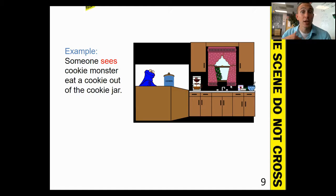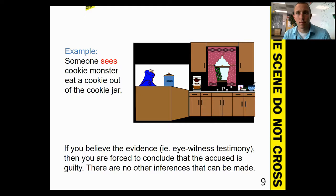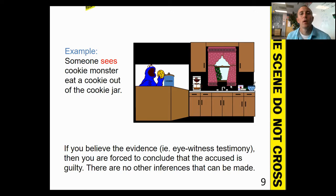Hearsay is usually inadmissible in court. For example, if someone actually sees Cookie Monster eat a cookie from the jar, and you believe that person's testimony, there is no room for inference — you either believe what they said or you don't. There's really no gray area, whereas with circumstantial evidence there would be. It's either you see someone do something or you don't.